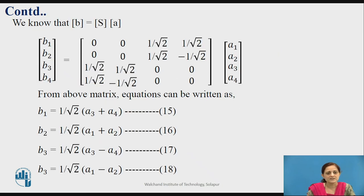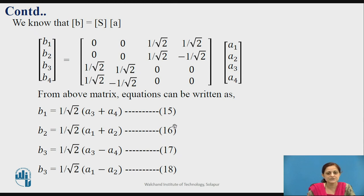Now you know how to find the output for all ports. The output matrix B equals S into A, where the output matrix is B, the input matrix is the column matrix A, and S is the scattering matrix. Using this, you can write the equations for the four outputs B1, B2, B3, and B4 — giving equations 15, 16, 17, and 18.